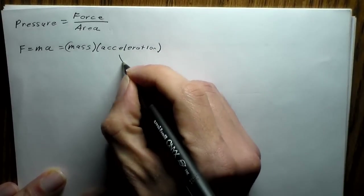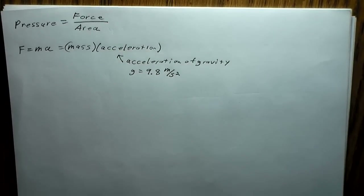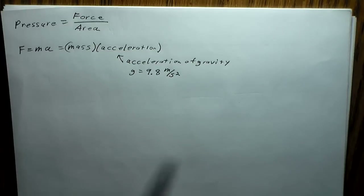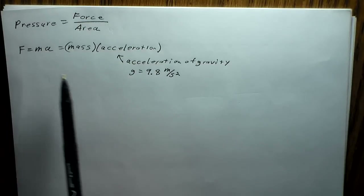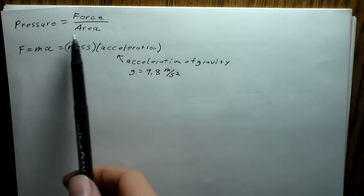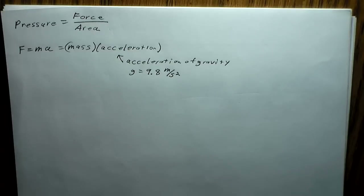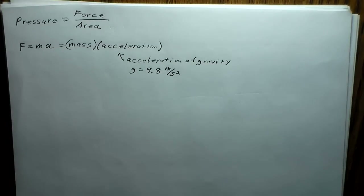When we're dealing with pressure, we'll usually be dealing with the acceleration of gravity. The acceleration of gravity on Earth is 9.8 meters per second squared. The easiest way to apply a force is to simply put something on top of something else — the mass of that object applies a force, and over a certain area, that creates a certain pressure.